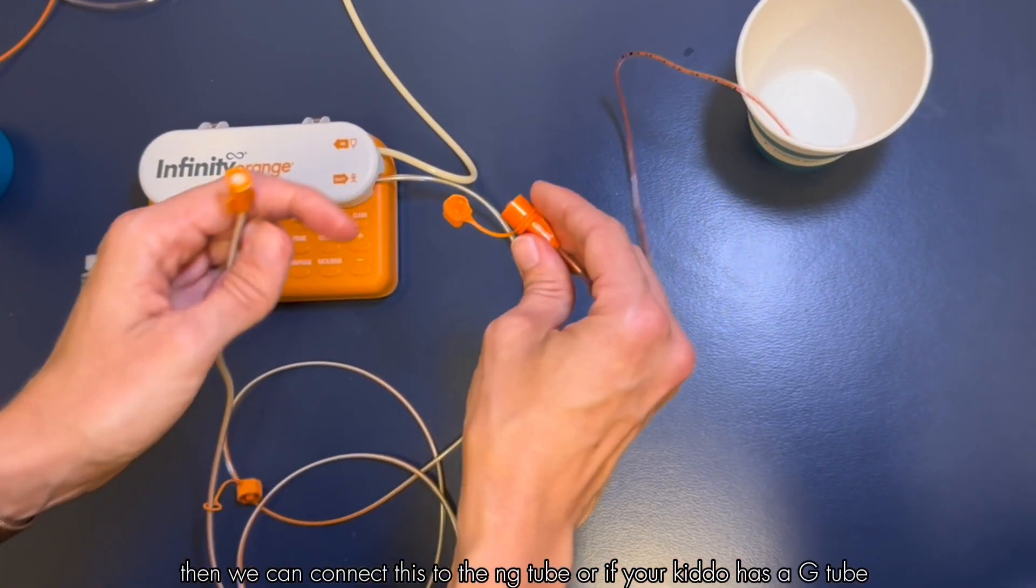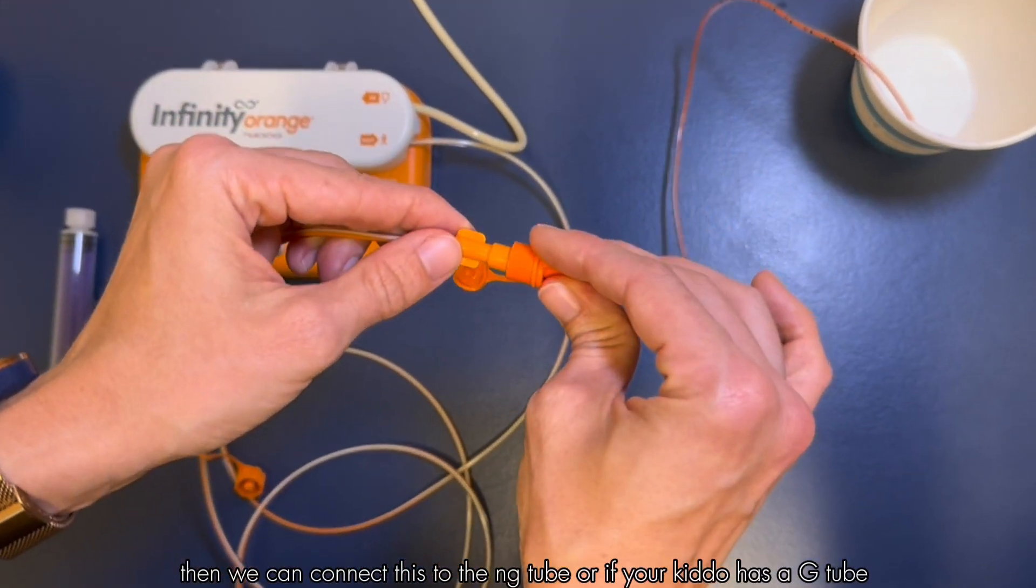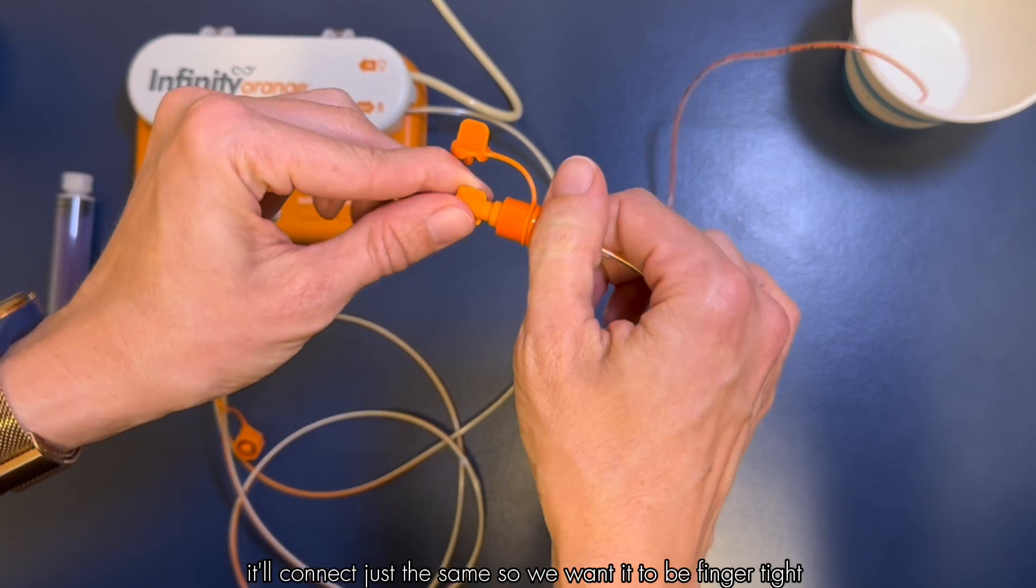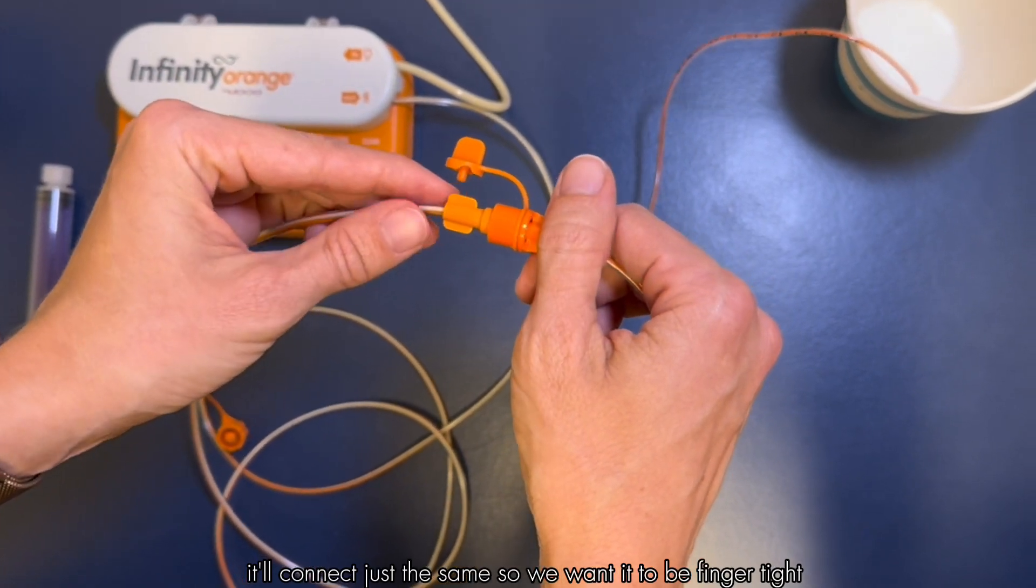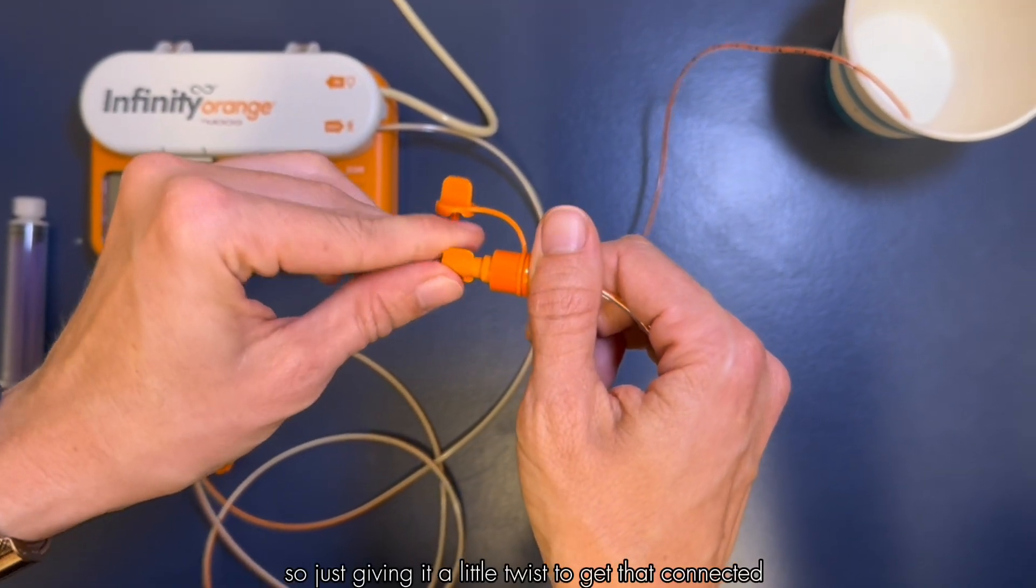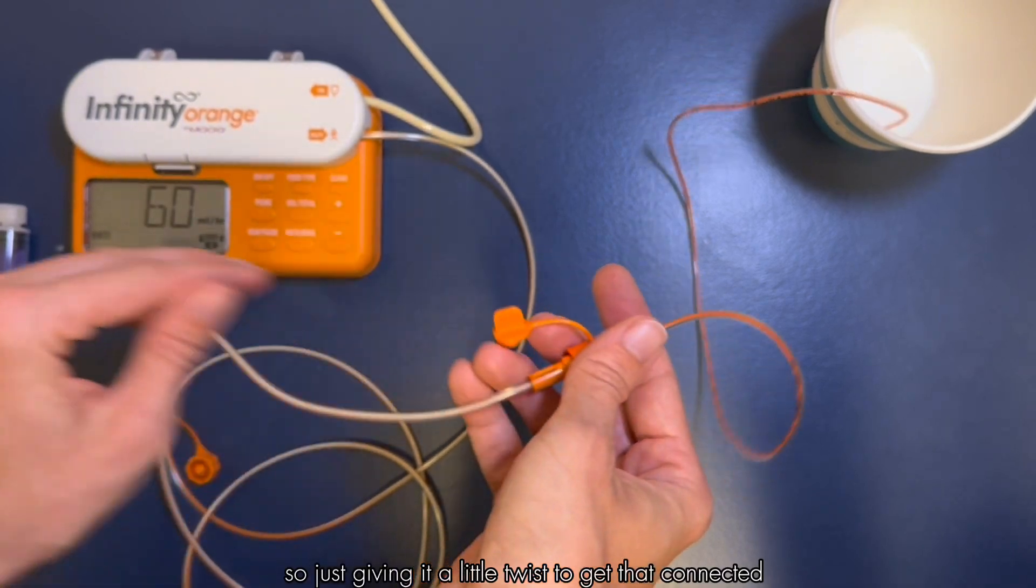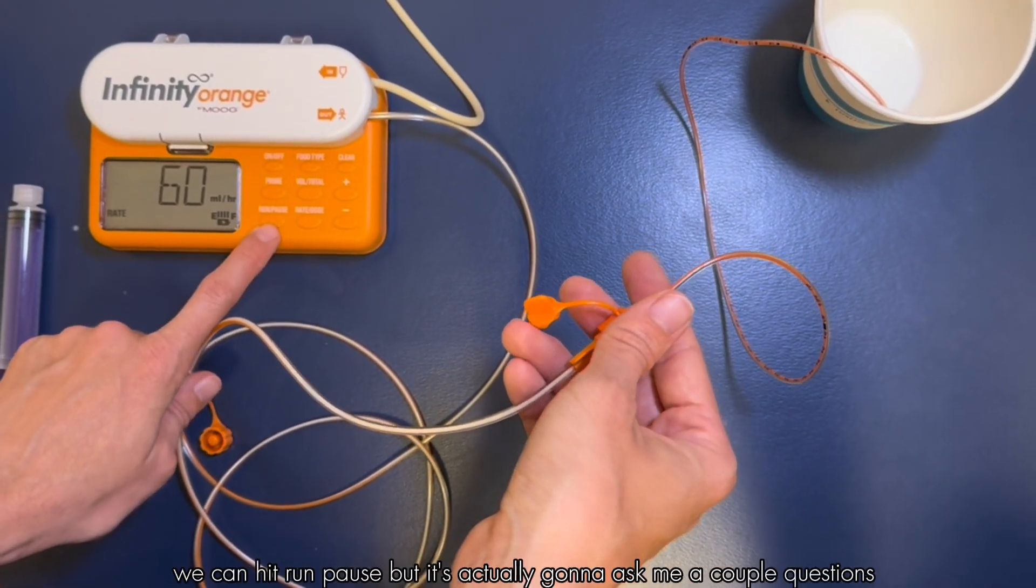Then we can connect this to the NG tube or if your kiddo has a G tube it'll connect just the same. We want it to be finger tight, just giving it a little twist to get that connected. And then to start the tube feeding we can hit run pause.